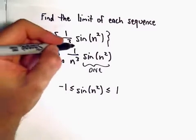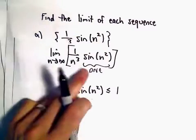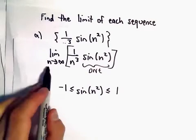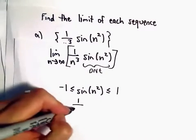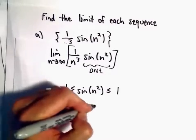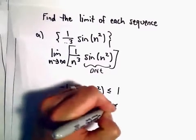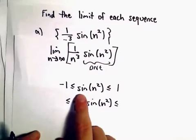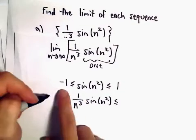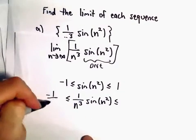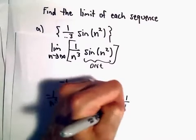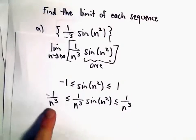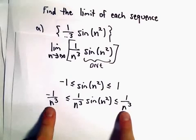The function I want, though, I don't want just sine of n squared. I want sine of n squared times 1 over n to the third. Since n's some positive number, if we multiply by 1 over n to the third, multiplying the left side by 1 over n to the third and the right side by 1 over n to the third, I'll get this small function and this big function.